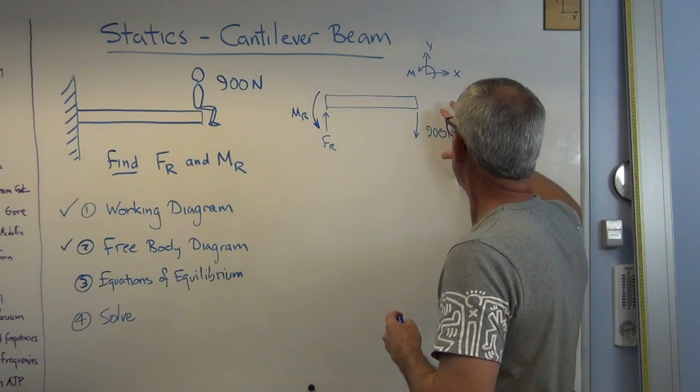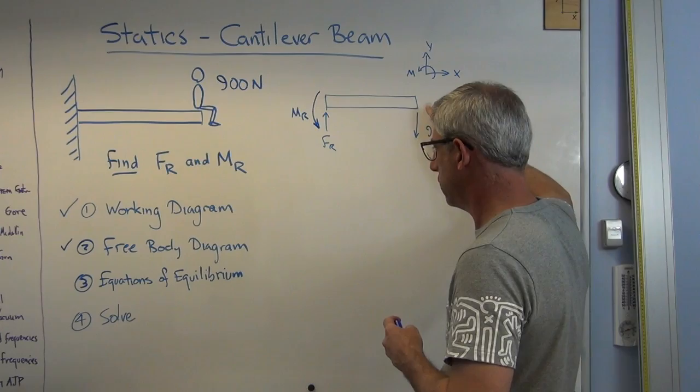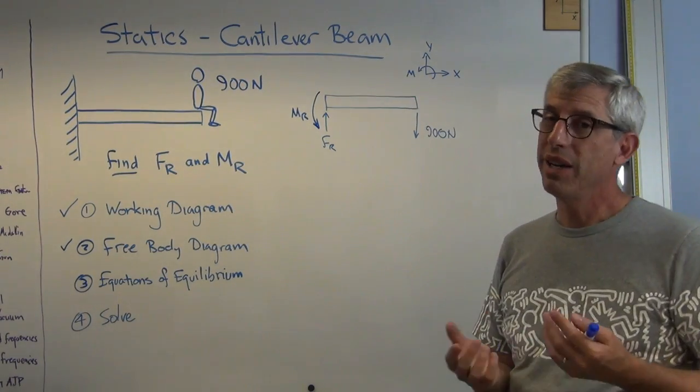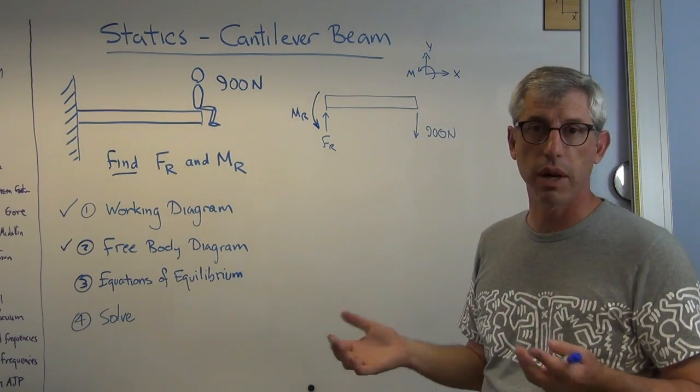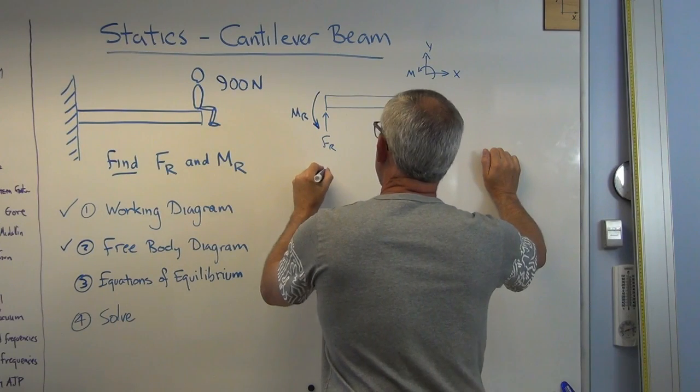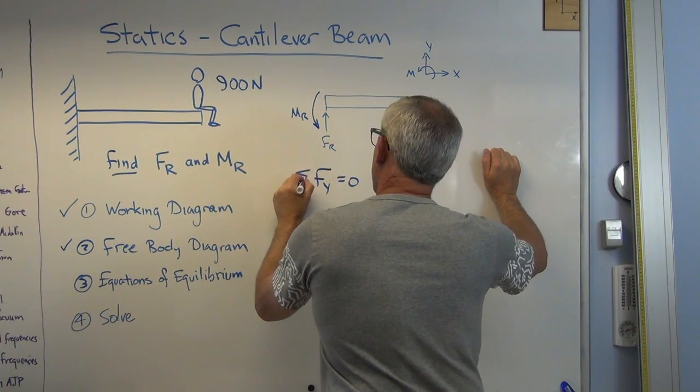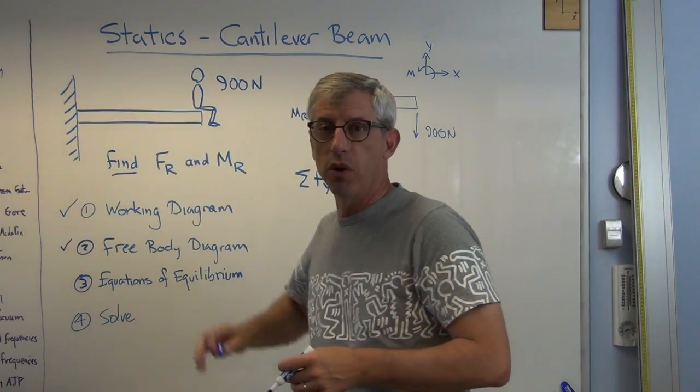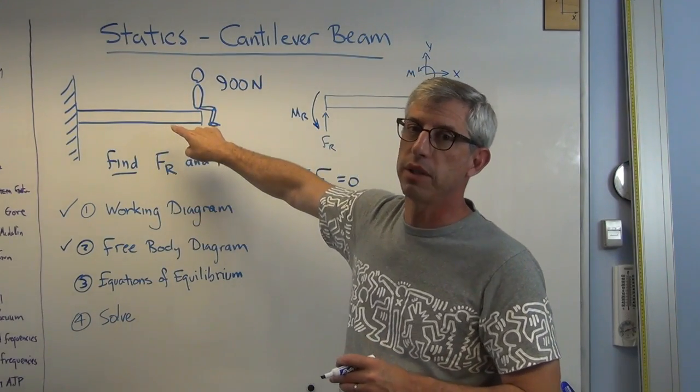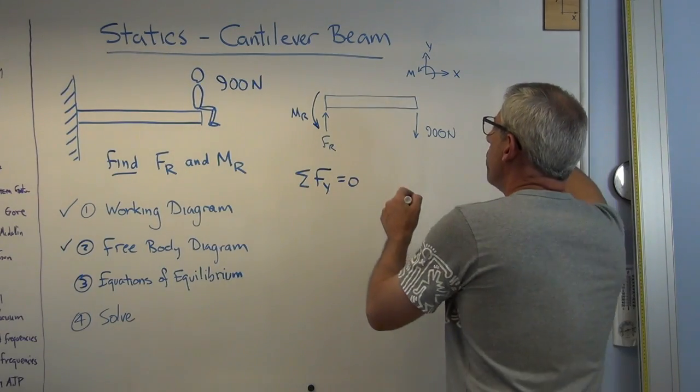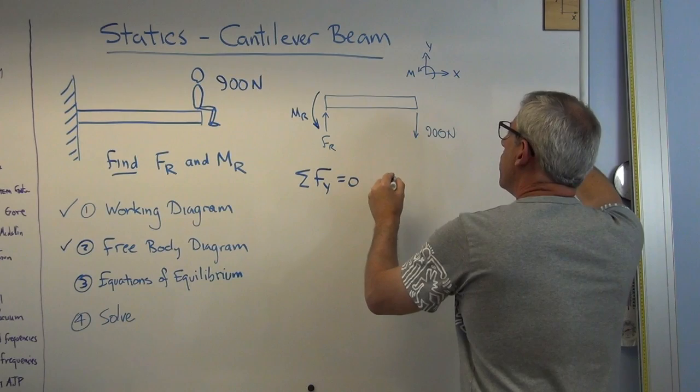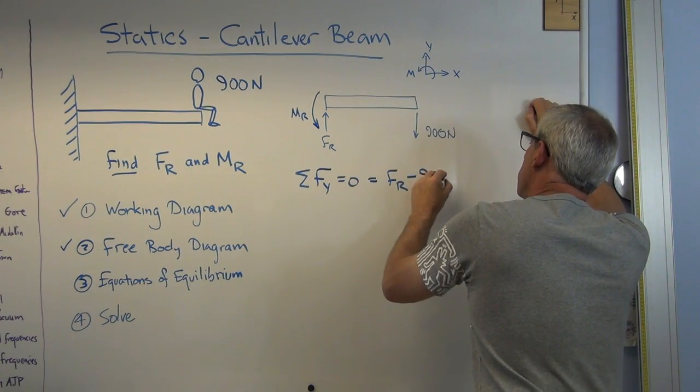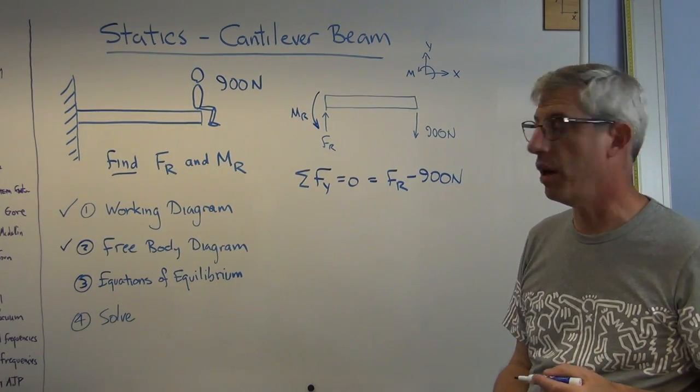Equations of equilibrium. Well, this is a 2D problem. There's only motions in the x and y direction. And there's only moment in the z direction going from x to y. So this is going to be pretty simple. Well, there's no forces in the x direction. I don't need to write that one. In the y direction, the sum of the forces in the y direction, the sum has to be zero. If it's not, it's not static. It's a dynamics problem. So this is an equation of equilibrium right here. So FR is positive because it goes in the direction of y there, minus 900 newtons. And that has to equal zero. So that's one equation of equilibrium.